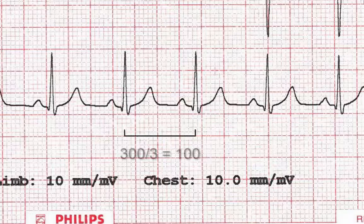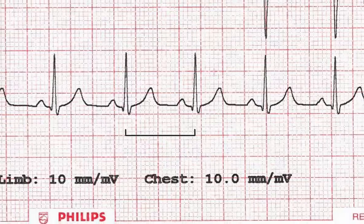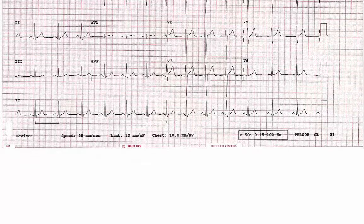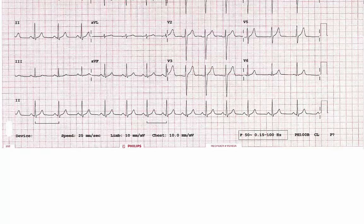Further along this ECG, you'll see that there are closer to three large squares between each pair of beats. 300 divided by 3 is 100, so at this point the patient's heart rate was 100 beats per minute. Looking at the whole rhythm strip again, this irregularity can now be seen, and it's probably better to take an average than to use any pair of beats to calculate the heart rate.